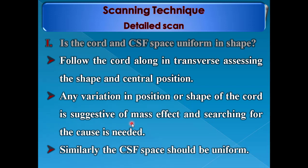Then we come to the detailed scan. Our aim is to answer six questions. The first is: are the cord and CSF space uniform in shape? Follow the cord along in the transverse plane assessing the shape and central position. Any variation in position or shape of the cord is suggestive of mass effect, and searching for the cause is needed.